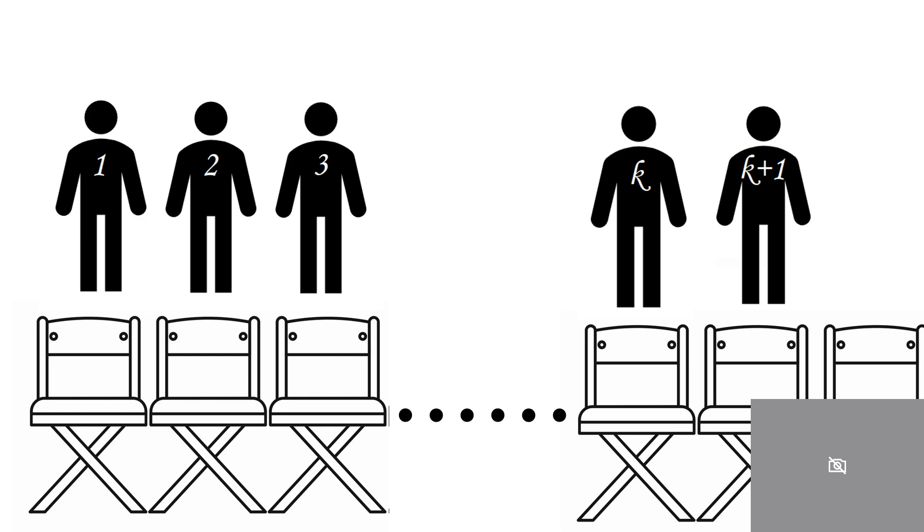The reason this works is because I know that person one has to sit in seat one. And if person one sits in seat one then person two will have to sit in seat two.